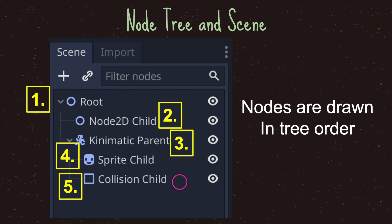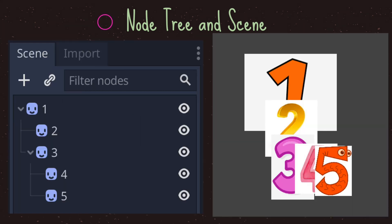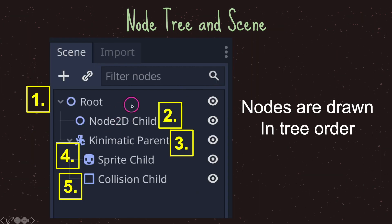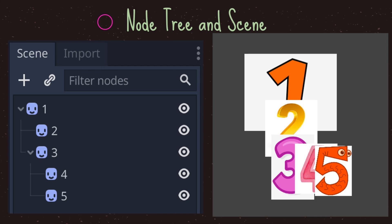Let's take a look at an example — imagine each of these nodes has an image and our tree structure is the same as the previous slide. First, we grab the first node in the scene and draw it onto our game, then move down the line drawing each subsequent node. The last thing drawn will be number five, and whatever image is in that fifth node will be at the front. The root node, drawn first, will be in the back because everything drawn after it gets drawn on top.